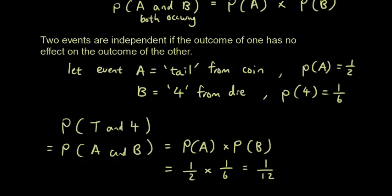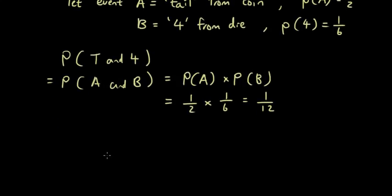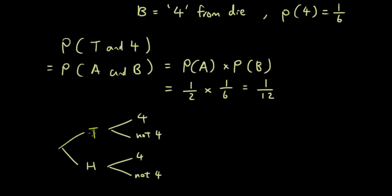Now this completely matches how you would do it by drawing a tree diagram. If you want to draw a tree, it'll look like this, right? The first toss, you either get a head or a tail. So the probability of getting a tail is a half, and then you write out all the probabilities. So the probability of getting a 4 is 1 out of 6, not 4 is 5 out of 6, write all that out.